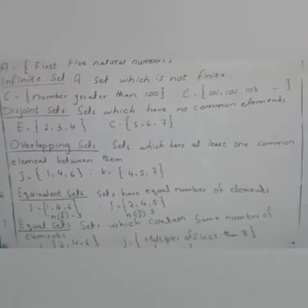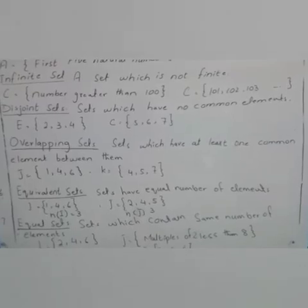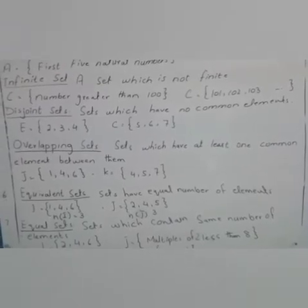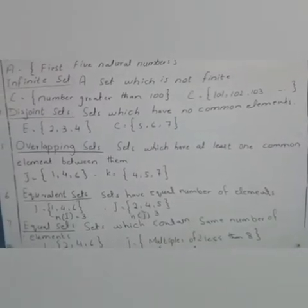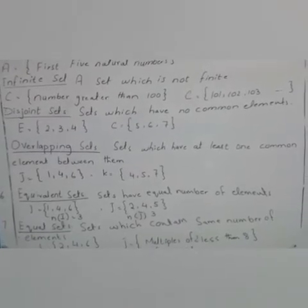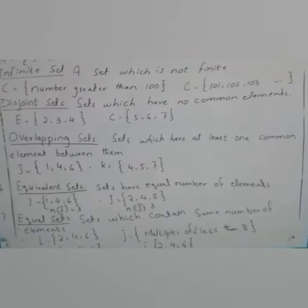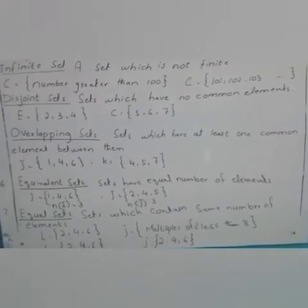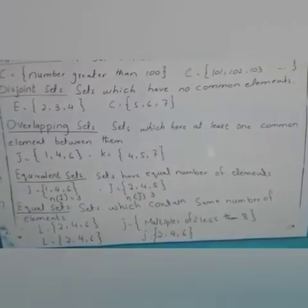Equivalent sets. Sets have equal number of elements. J is equal to 1, 4, 6. J has 3 elements. And I is equal to 2, 4, 5. I also has 3 elements. Both sets have equal number of elements. That's why these are equivalent sets.